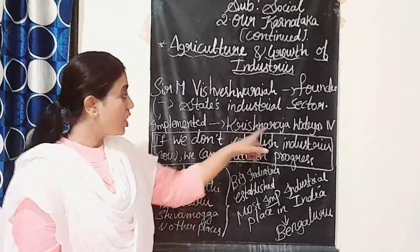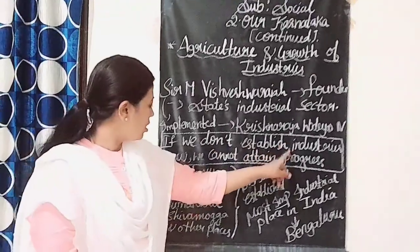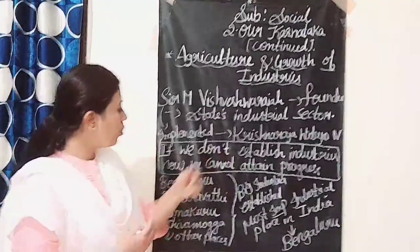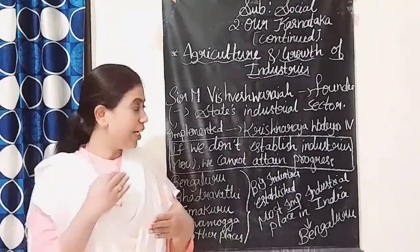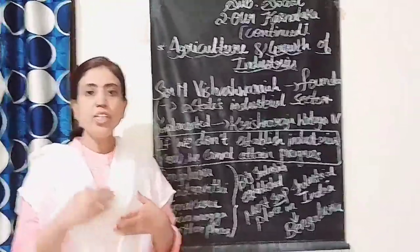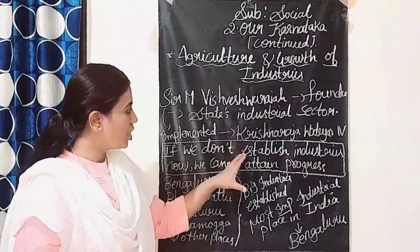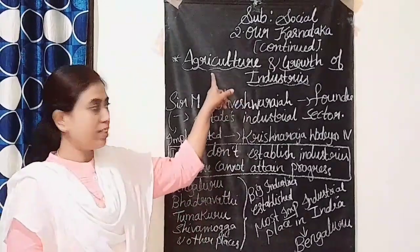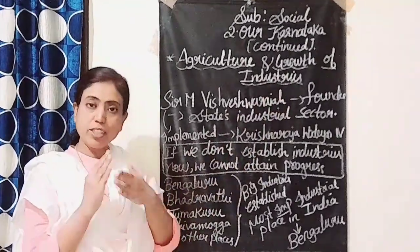According to Krishna Raja Wadiyar IV, if industries are not established now, progress cannot be attained. Other countries were already progressing by implementing industries, while Karnataka was only in the agricultural sector, which is the primary sector. Industry is the secondary sector of economy.